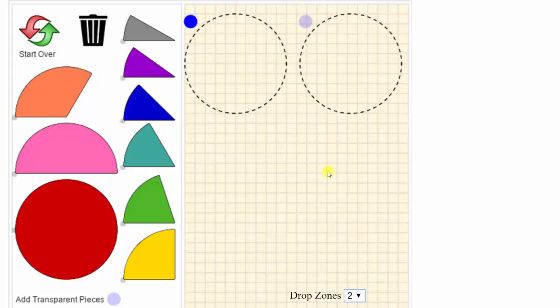Next, select the drop zone you wish to fill by clicking on the blue dot located in the upper left corner of each drop zone, which is this dot or this circle here. And now we can enter fraction pieces into the drop zone.